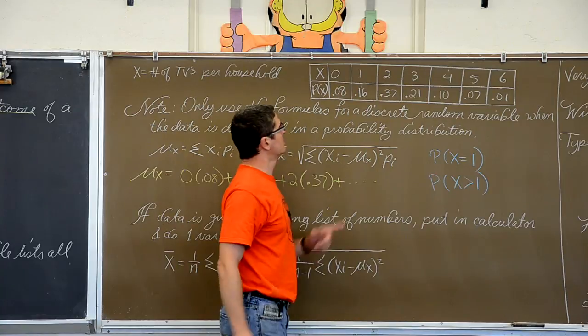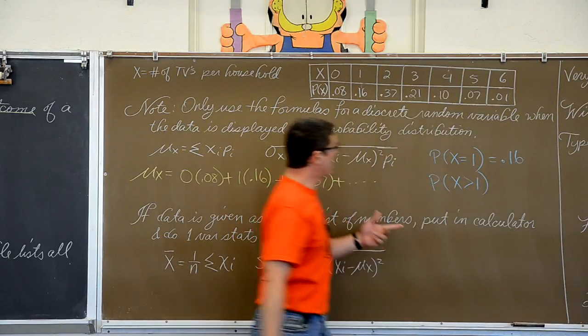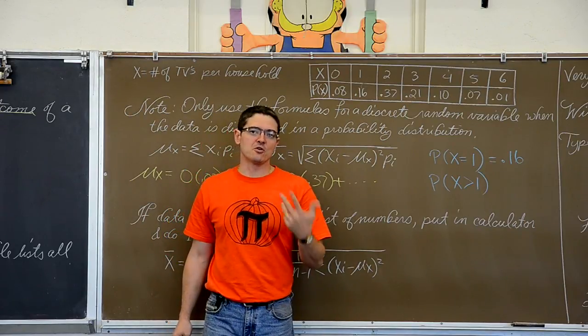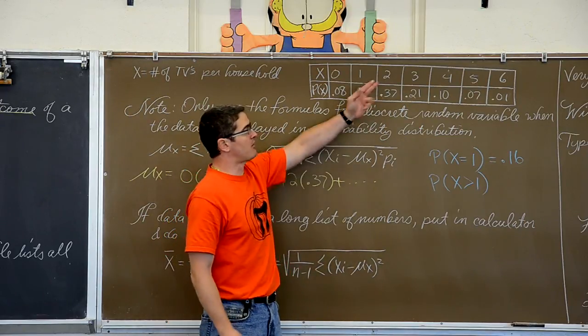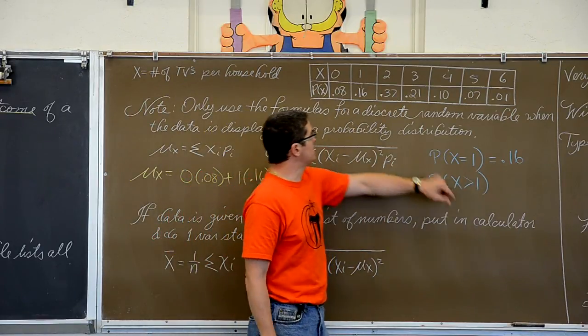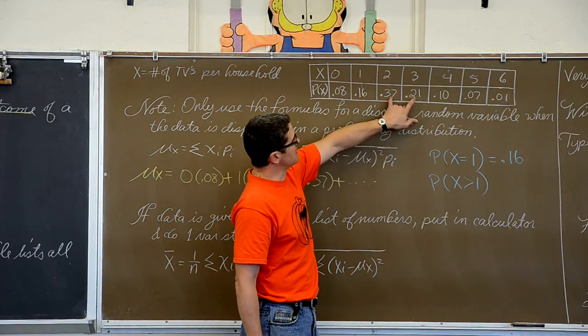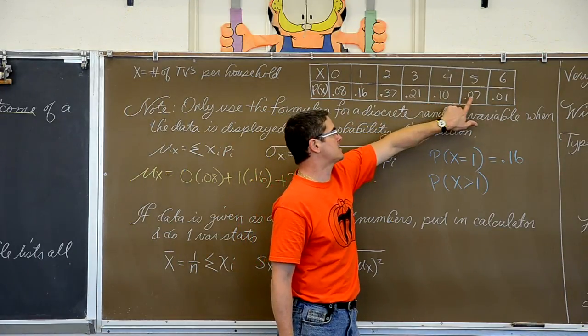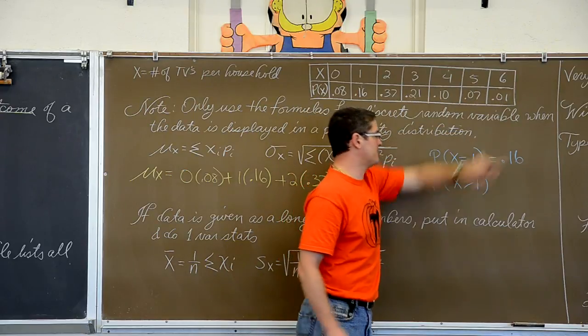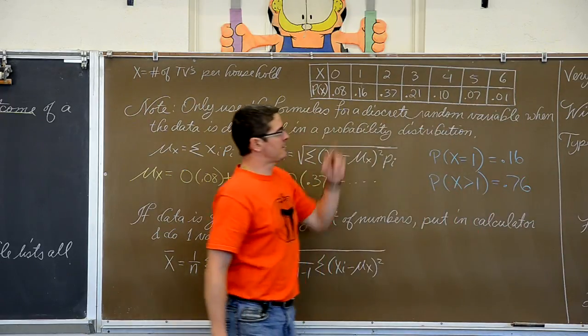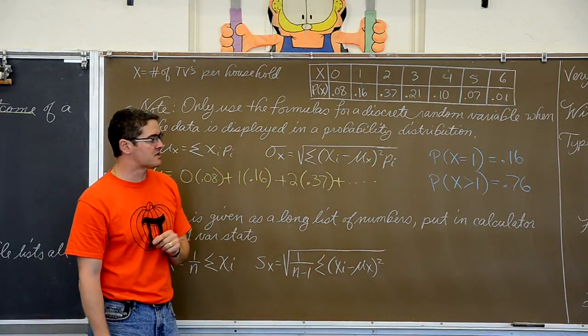What is the probability that x is greater than one? Well that is going to be all my outcomes that are greater than one. And just like we did when we first learned probabilities and we set up these probability models in the last chapter, more than one is .37, .57, .58, .68, .75, 76%.